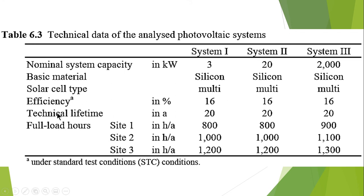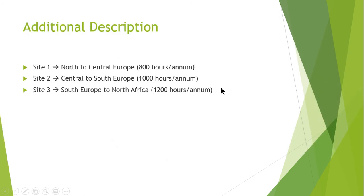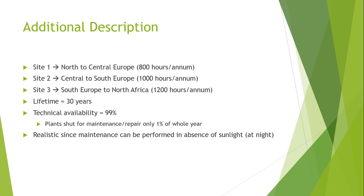This defines the standard test conditions (STC) previously mentioned. For these systems, a technical availability of 99 percent is assumed — meaning that only for one percent of the year is power generation unavailable due to failures or maintenance. This is realistic, as maintenance work can partially be performed when no electrical energy can be provided due to lack of solar radiation, essentially during night hours.